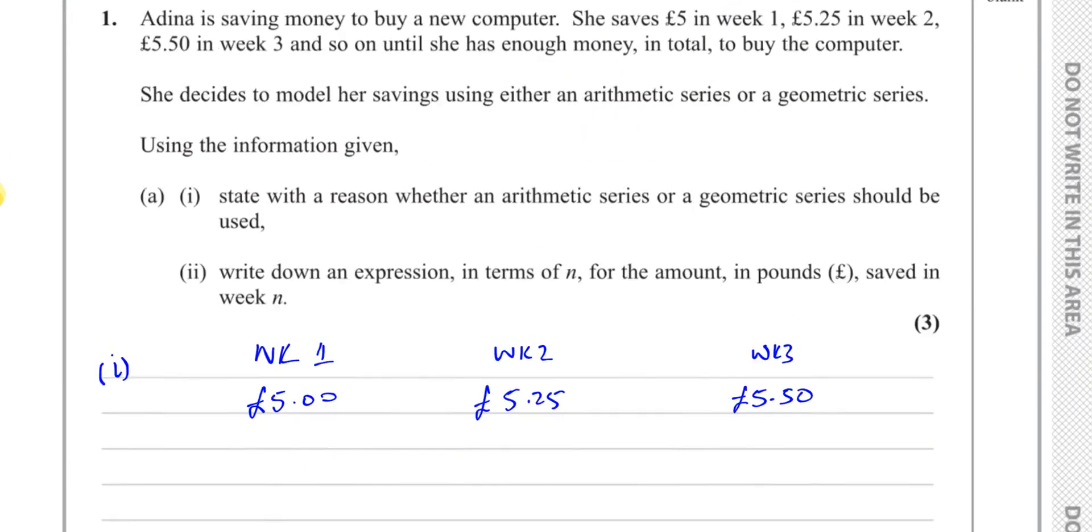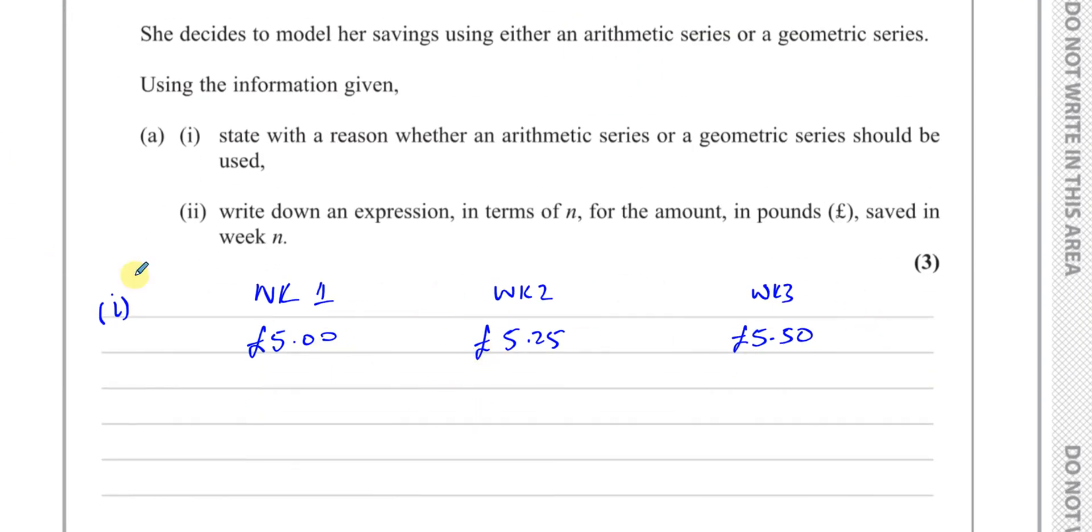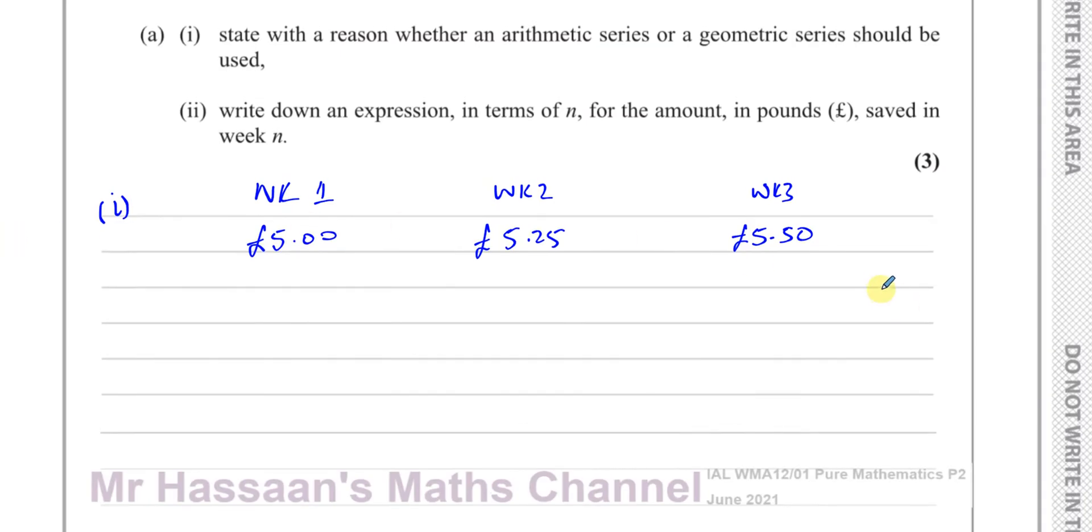Part A(i) states with a reason whether an arithmetic series or a geometric series should be used. Now, an arithmetic series is one which increases by a constant amount each time. If you look at week 1, she has saved £5.00, week 2 £5.25, and week 3 £5.50. It's pretty obvious that it's going up by the same amount each time, which is £0.25 every week.